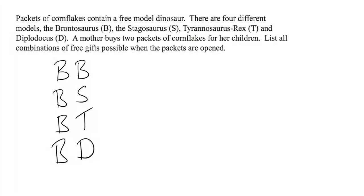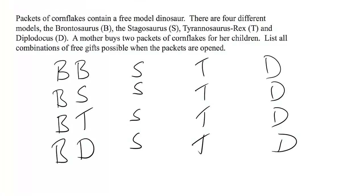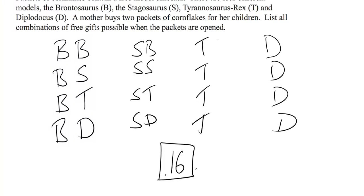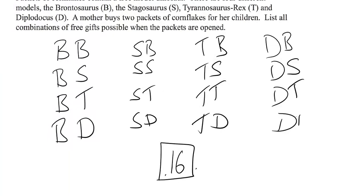Then we consider: what are the likely outcomes if we had the stegosaurus first? Straight away you can see there's going to be another four. So in this case we're going to have four different columns, each one four long. That means there are going to be 16 different outcomes. The question asks us to list them: BB, BS, BT, BD, SB, SS, ST, SD, TB, TS, TT, TD, DB, DS, DT, DD — and I've written them in the same order so I'm careful I don't miss anything at all.